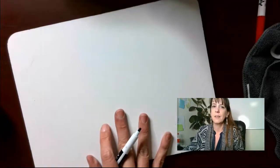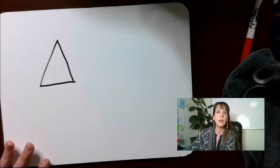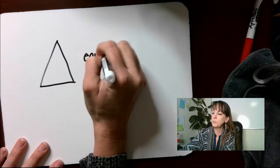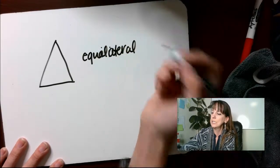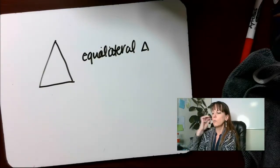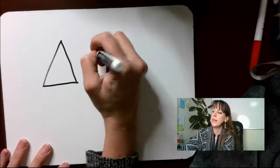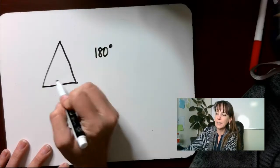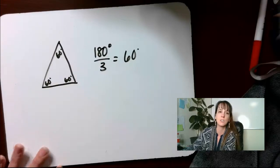Let's do problem A. The sides of a regular triangle are equal in length and angles are equal in measure — what is the measure of each angle? This is called an equilateral triangle. There are 180 degrees in a whole triangle, and if all angles are equal, we divide by three, which gives us 60 degrees. So each angle in a regular triangle is 60 degrees.